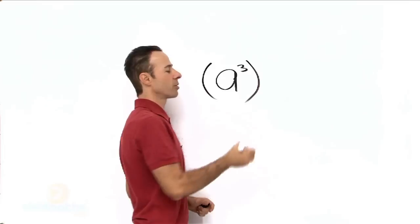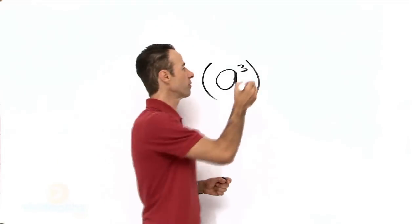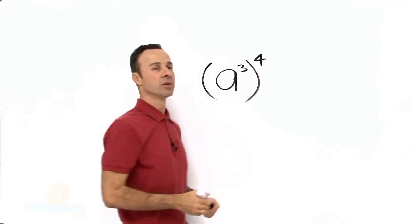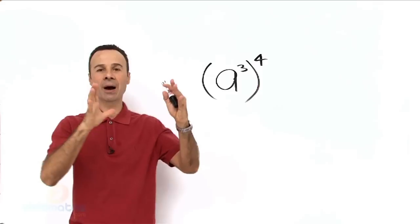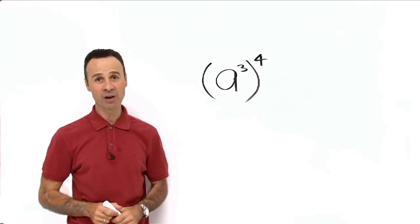Well, let's say we got A to the power of 3 and then to the power of 4. This is known as power to the power. This is a very powerful way of looking at it.